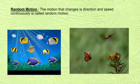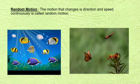Random motion: the motion that changes its direction and speed continuously is called random motion. For example, swimming fishes, flying birds and butterfly, motion of the birds, and motion of the ants are examples of random motion.